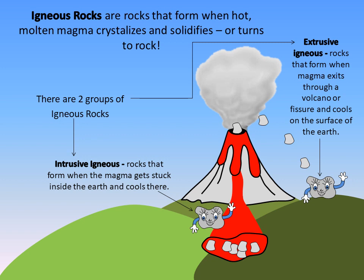Intrusive igneous rocks form when the magma gets stuck inside the earth and cools there. Extrusive igneous rocks form when magma exits through a volcano or a fissure and cools on the surface of the earth. Some igneous rocks you may be familiar with include granite and basalt.